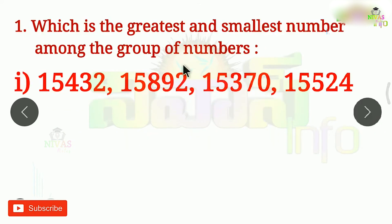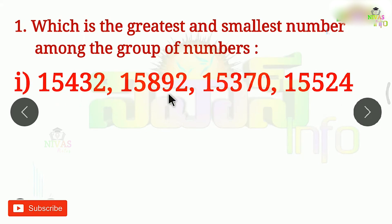We will ask the first question: which is the greatest and smallest number among a group of numbers? If you have some examples or problems, there is a group of numbers. The greatest number is the big number and the smallest is the small number. So the first problem is where there is a group of numbers — big and small — and we will count.